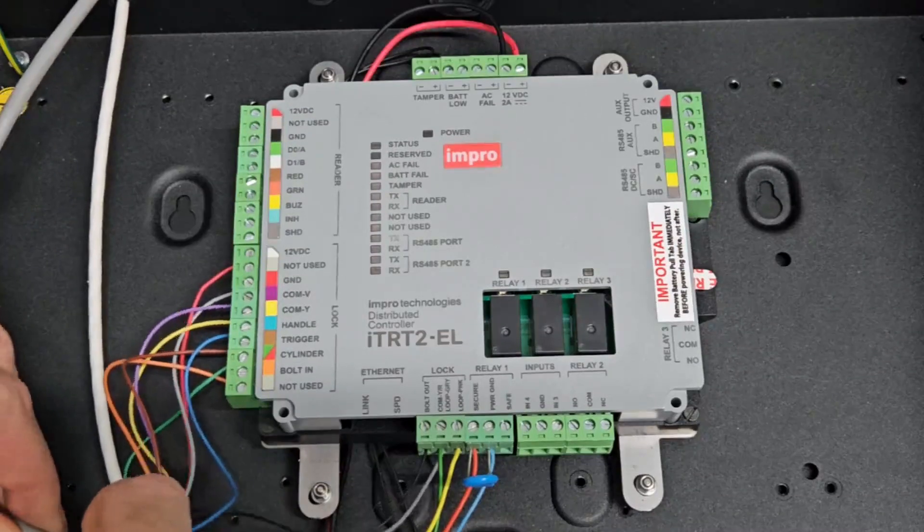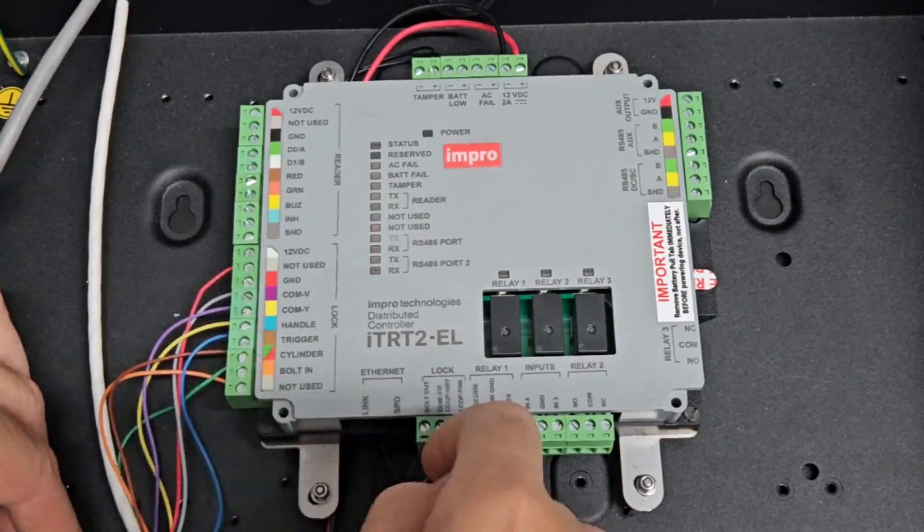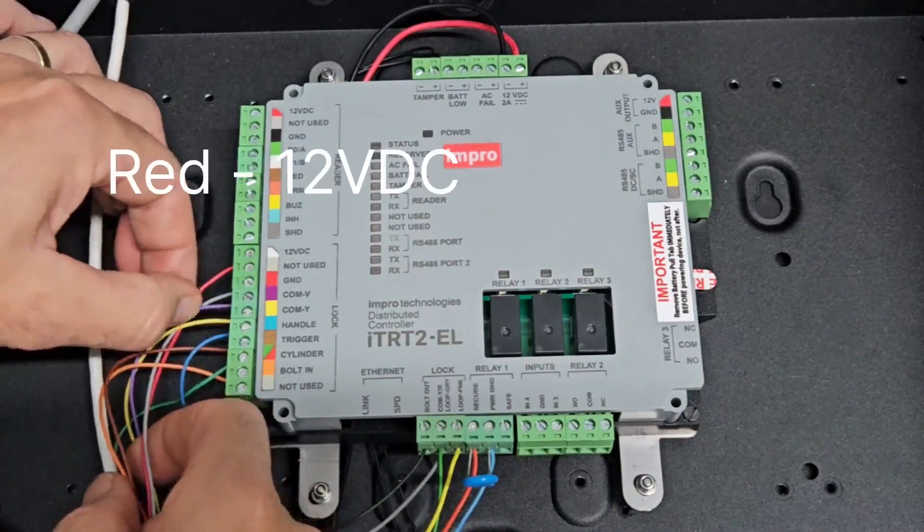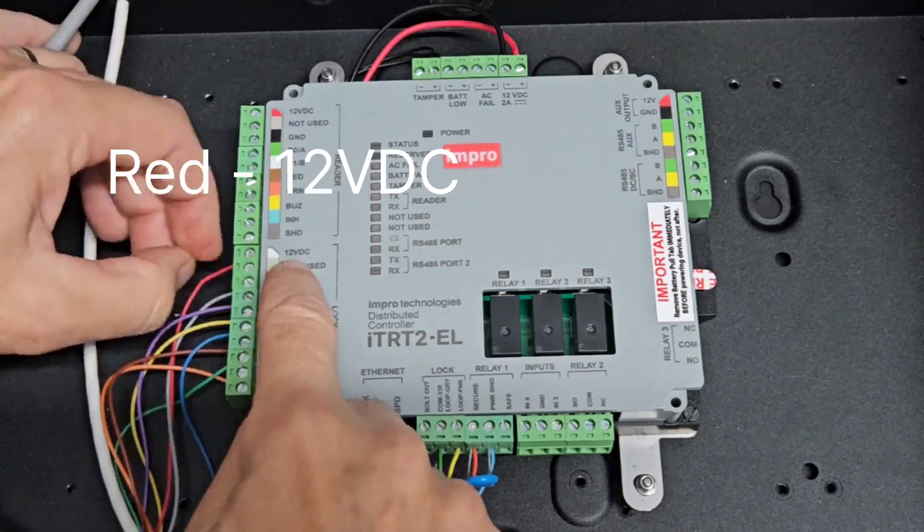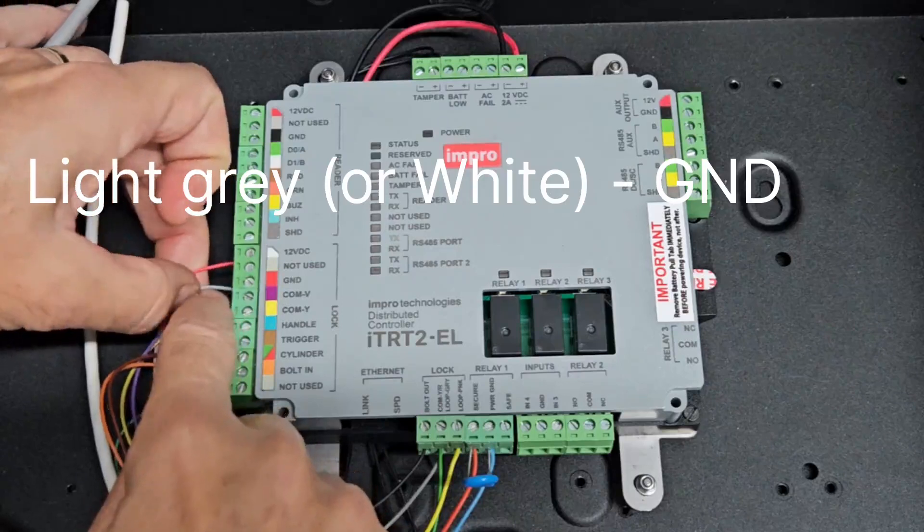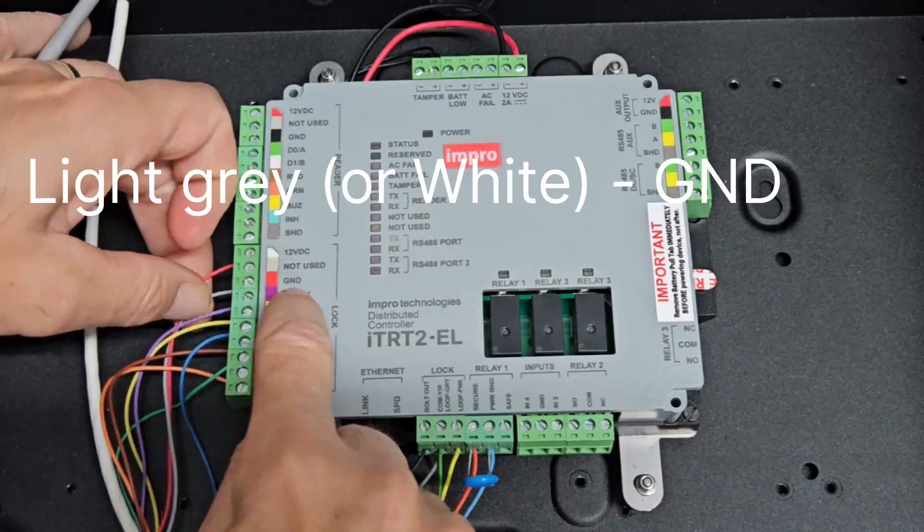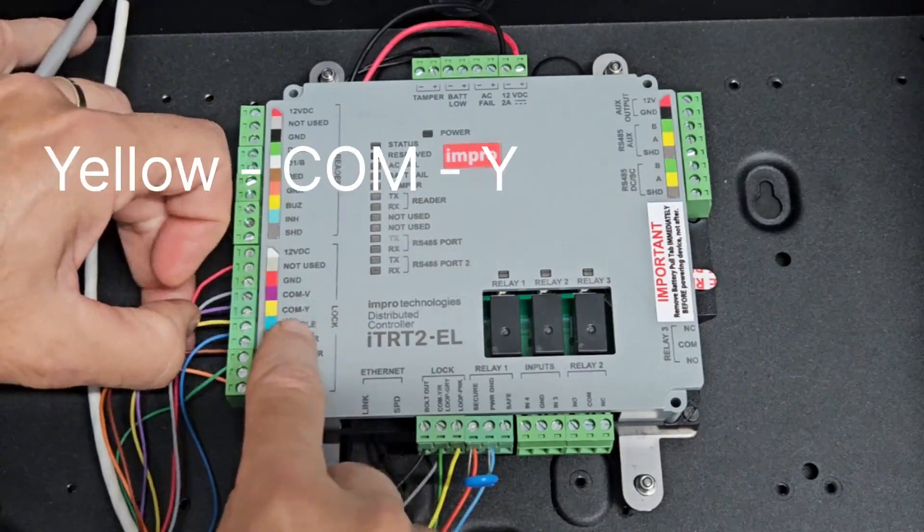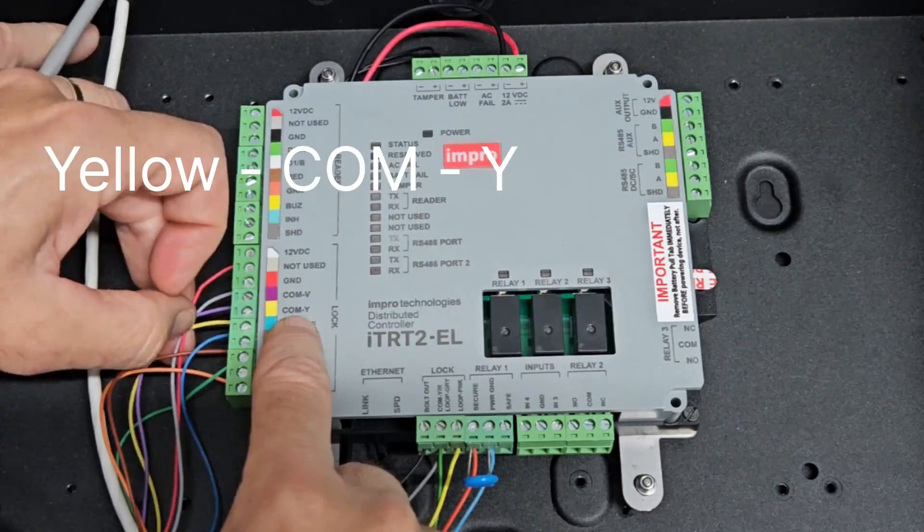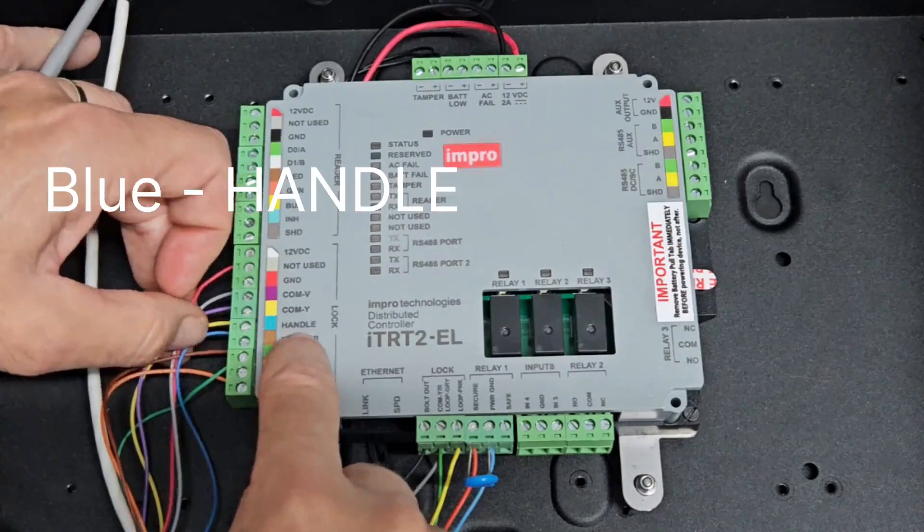Beginning with the 10-core data cable, moving around this corner here. We'll start with a red wire going to 12 volts DC, a light grey or white wire going into ground, a purple wire going into COM V, yellow going into COM Y, blue into handle.